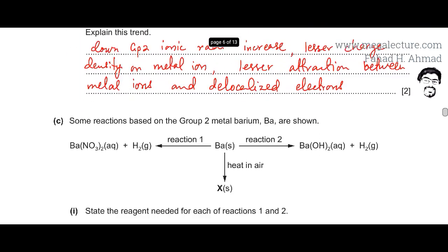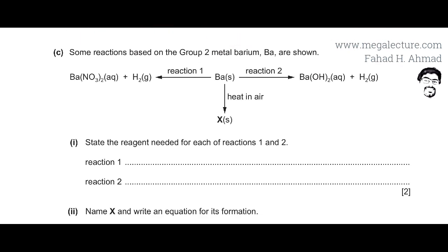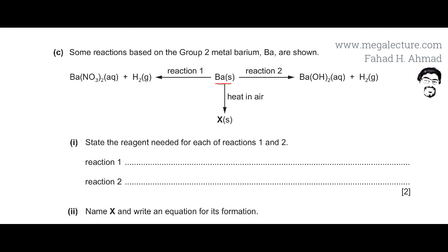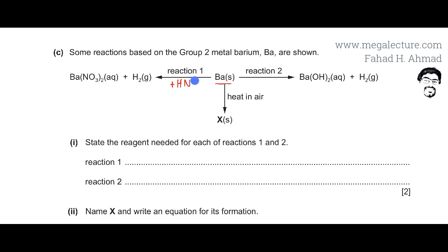Moving to the next part of the question: some reactions of group 2 metal barium are shown, and we need to state the reagents for reactions 1 and 2. In reaction 1, barium metal is converted into barium nitrate and hydrogen gas. Metals react with acids to produce salt plus H2, so the acid here is nitric acid, HNO3. The reagent needed is HNO3.